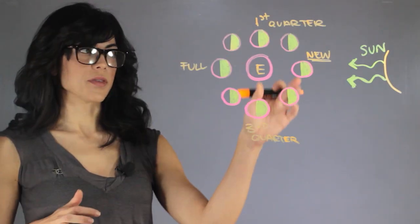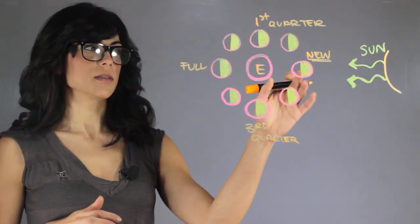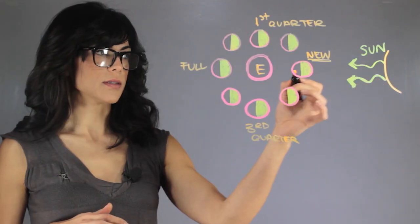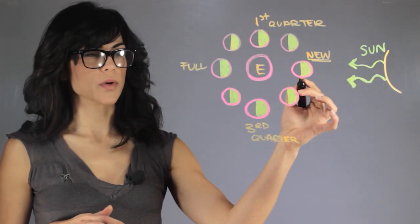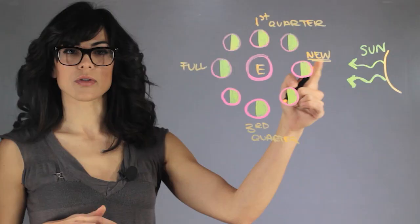So here we have the moon phases and here is the Sun. We can see if the earth is here and the moon is right here, we see nothing. So this is the new moon.